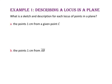Let's begin by drawing point C. Now let's draw several points that are one centimeter from point C. Notice that these points create a circle. So let's connect the points that are one centimeter from point C. The locus one centimeter from given point C is a circle.